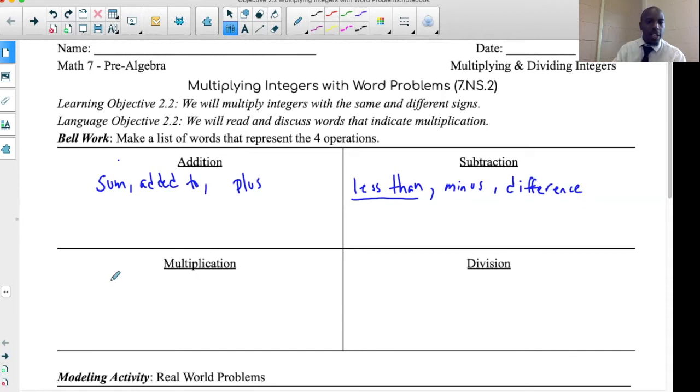Let's go to multiplication. I want to write the words 'tripled' and 'doubled'. Just so you guys are aware, the word 'tripled' means three times something, the word 'double' means two times of something. Of course you have the word 'product'. Notice I wrote 'product' here which is the answer to multiplication, the word 'sum' which is the answer to addition, and 'difference' which is the answer to subtraction.